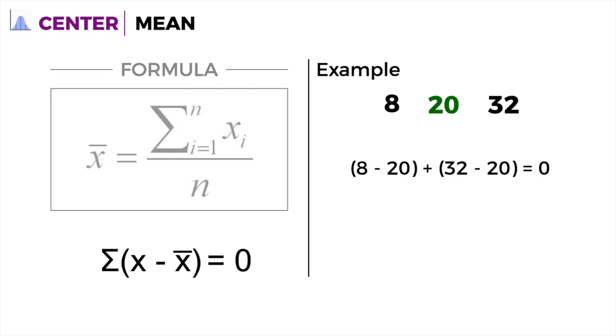We have 8 minus the mean, which is 20, plus 32 minus 20. We get negative 12 plus 12. When you add a negative and a positive, it cancels out, so we get 0. With this, we know that 20 is the mean for the whole set of data.